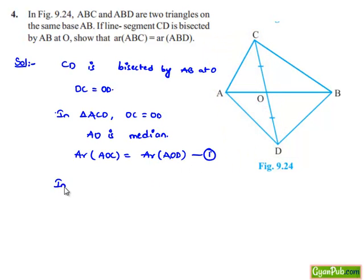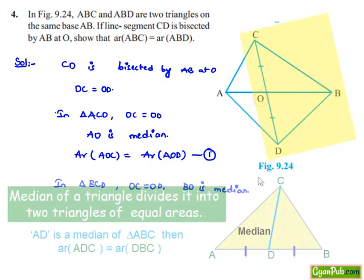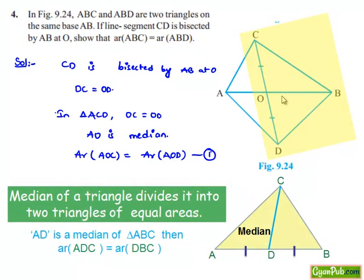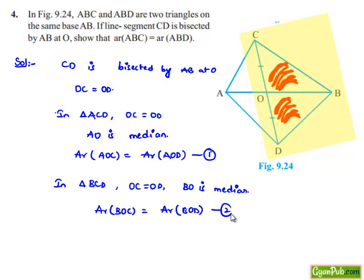Similarly, if we consider triangle BCD, OC is equal to OD. Therefore, we can say that BO is the median. We know that in a triangle, a median divides the area into two equal halves. Therefore, area of triangle BOC is equal to area of triangle BOD. Let this be equation number 2.